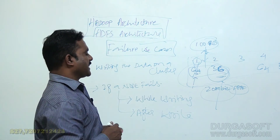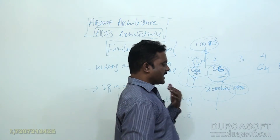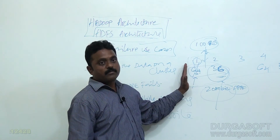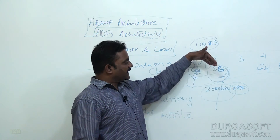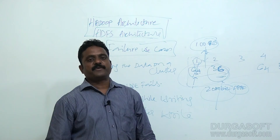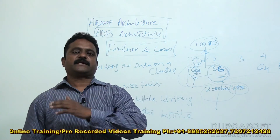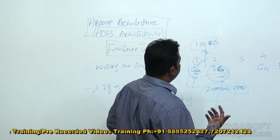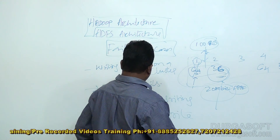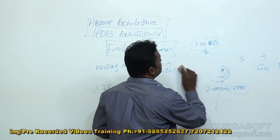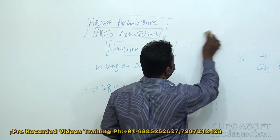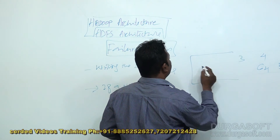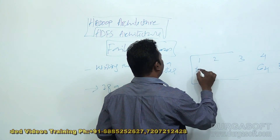We redo the process of writing again. When you are writing a file and one node gets a problem, the already-written data is called zombie data. We flush that out and redo the process of writing once again. This is one of the failed case scenarios. That is while writing. Now let us see the next scenario: I have written the entire file of 64 and 36.